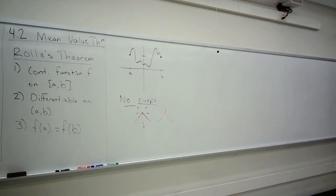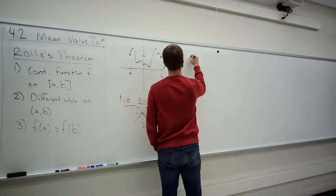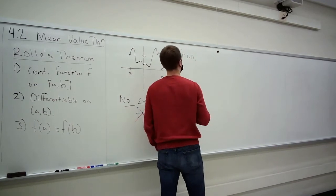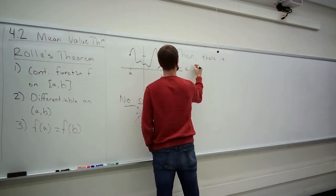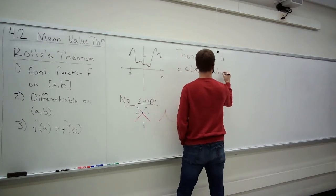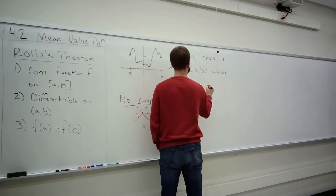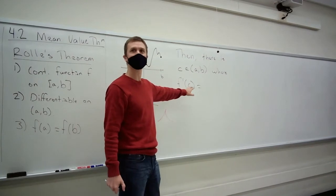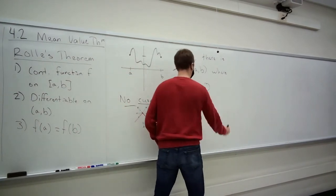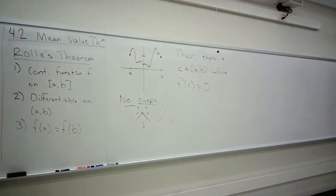Then the conclusion of Rolle's theorem says that there is some c inside our open interval A to B where f prime at c equals — what would you guess? I was hoping because of recency, the last thing we talked about were critical values, and c is the first letter. F prime of c is zero.